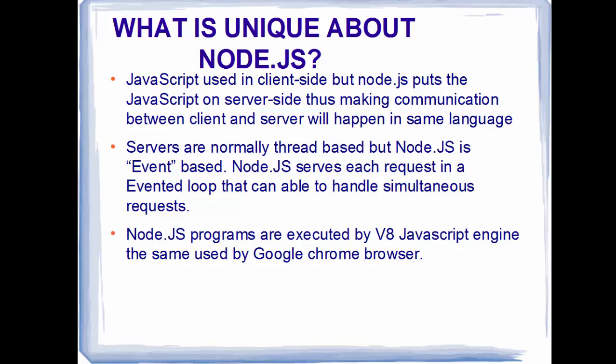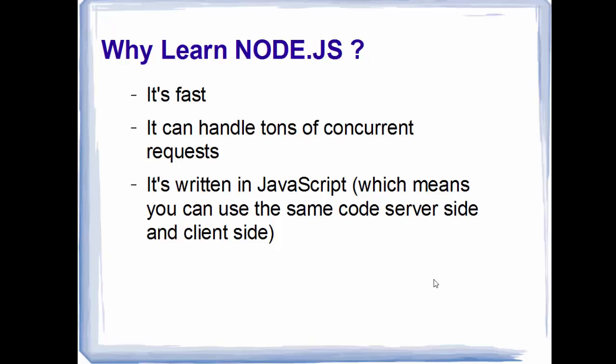Servers are normally thread-based, but Node.js is event-based. Node.js serves each request in an evented loop that is able to handle simultaneous requests, so it only has one thread which uses events. Node.js programs are also executed by the V8 JavaScript engine — the same engine behind the Google Chrome browser.